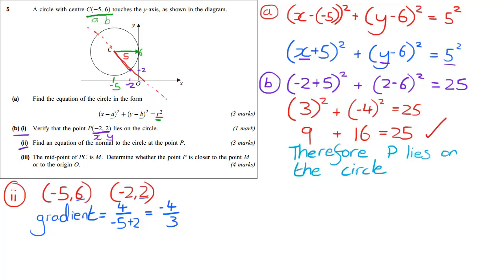We have our gradient. We have points. So we can do y minus y1 equals m times x minus x1. We seem to be using that a lot in this exam. Let's take these points. So y minus y1 is going to be 2. Then m, our gradient, is minus 4 over 3. And then x minus minus 2, so plus 2.